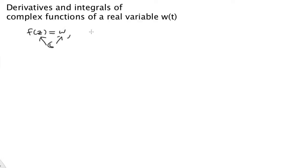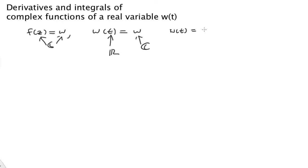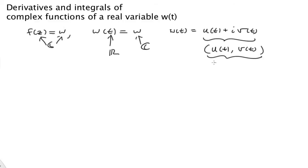Now we're going to take a step back and talk about something a little simpler, where we have an input that is a real number and the output is some W that's a complex number. So we're really talking about a vector function: W of t is equal to U of t plus i times V of t. That's simply a vector function — we could write that as (U(t), V(t)), and we're familiar with these as vector-valued functions.